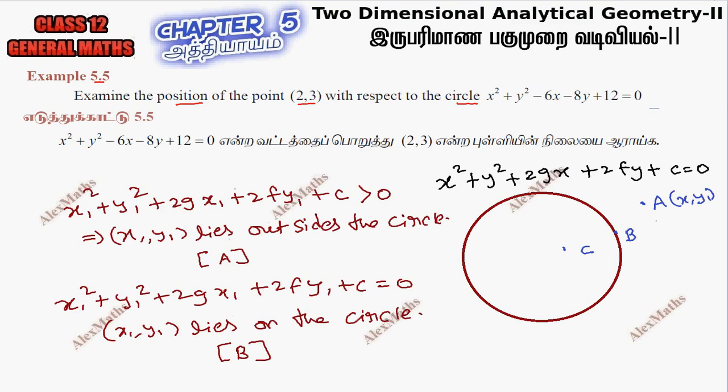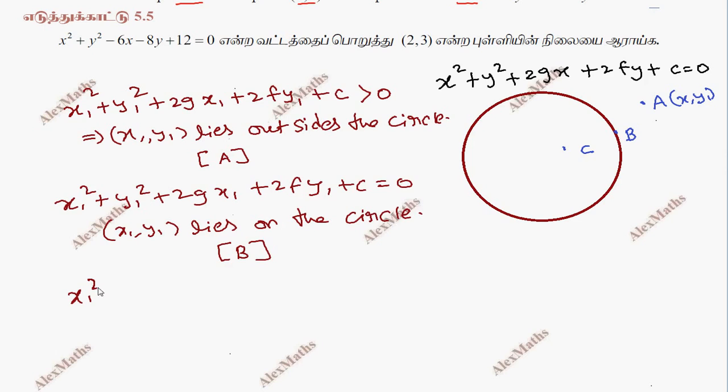This is less than 0. x1 square plus y1 square plus 2gx1 plus 2fy1 plus c equal to 0. This is equal to less than 0. So this is the point x1, y1 lies inside the circle.